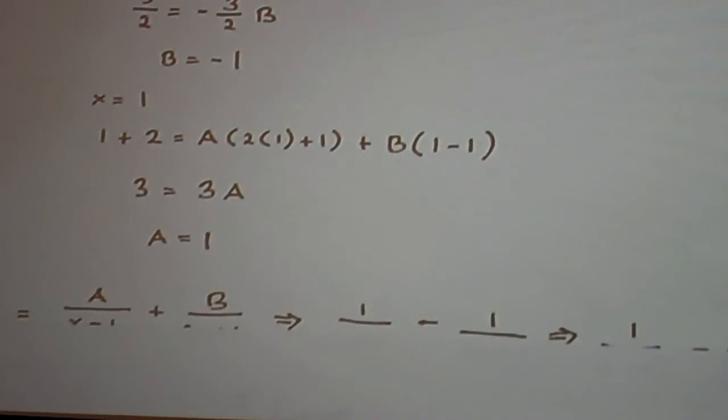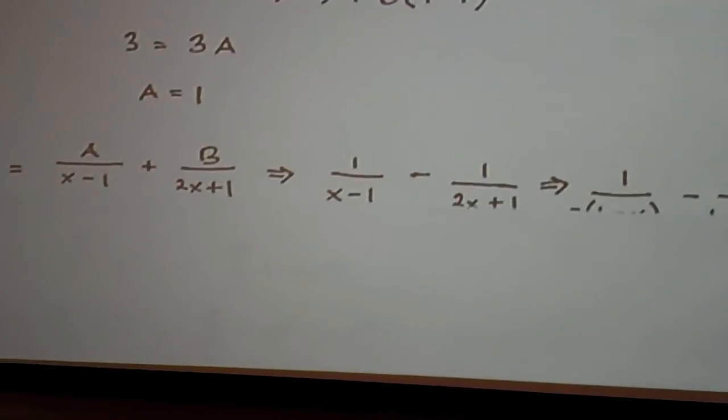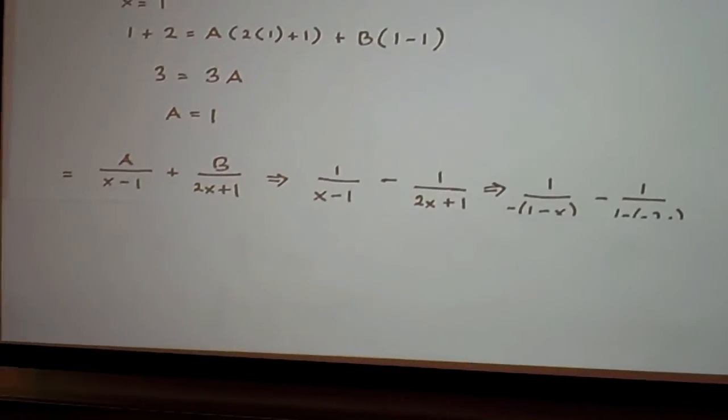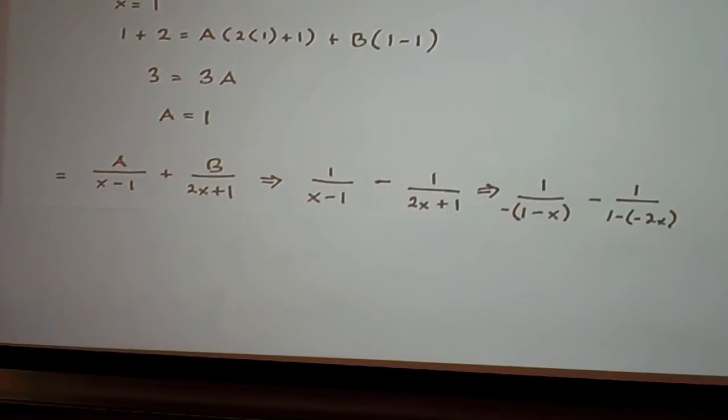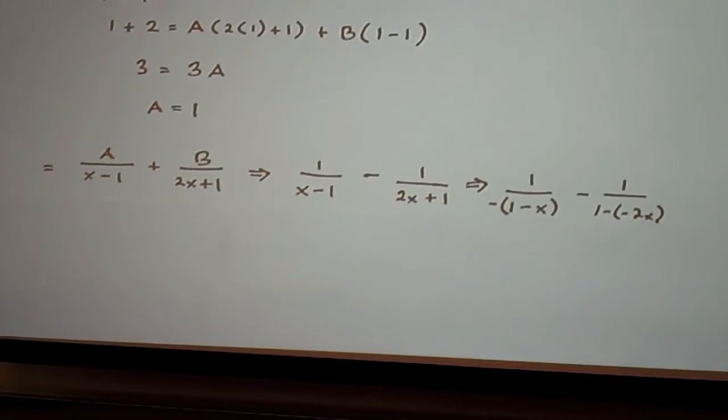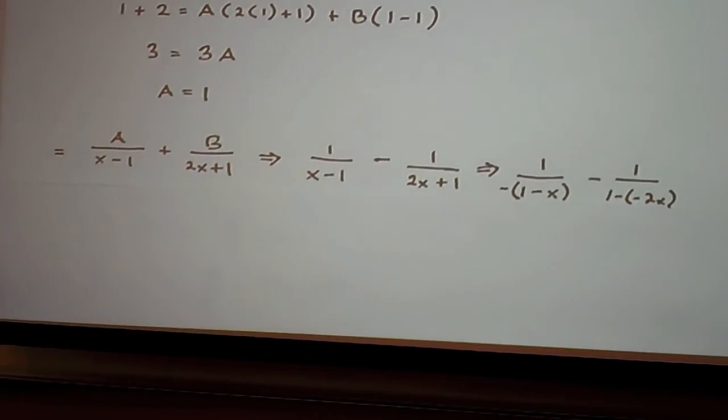Now we plug in A and B back into the numerator which will give us 1 over x minus 1 minus 1 over 2x plus 1.